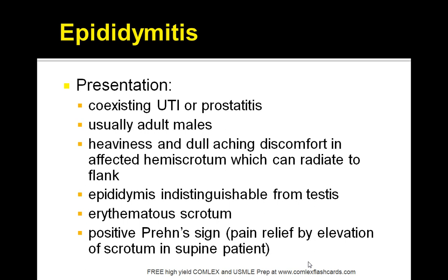The presentation is generally a patient with either a coexisting UTI or prostatitis, usually adult males. They have heaviness and dull aching discomfort in the affected hemiscrotum, which can radiate to the flank. The epididymis may be indistinguishable from the testes. There is also an erythematous scrotum, and the key finding is a positive Prehn's sign, which is pain relief by elevation of the scrotum in the supine position.